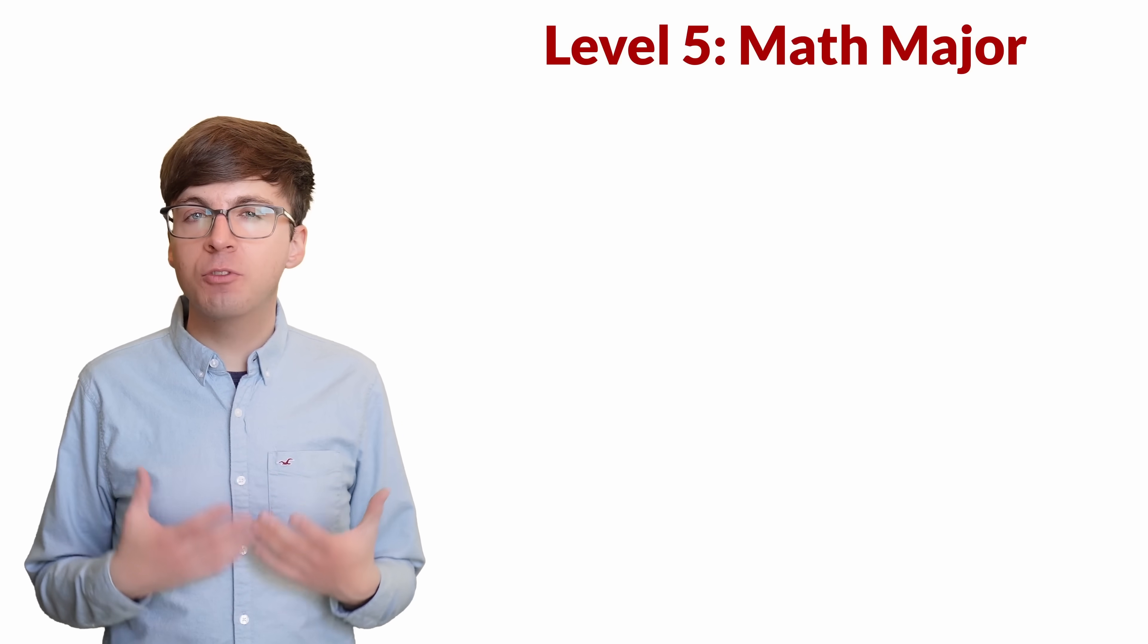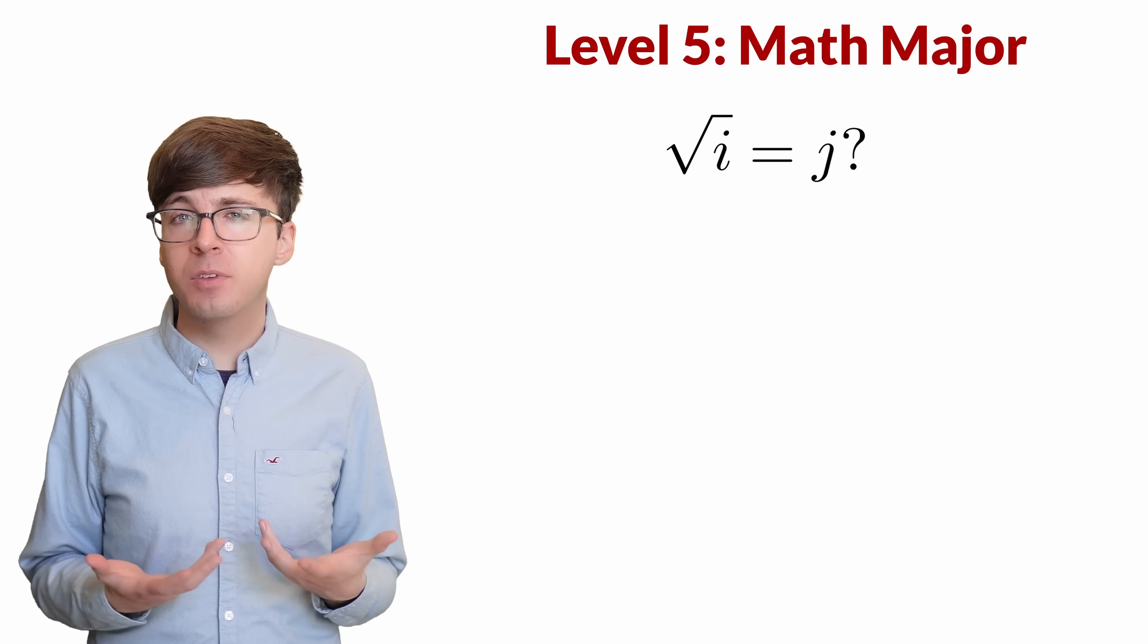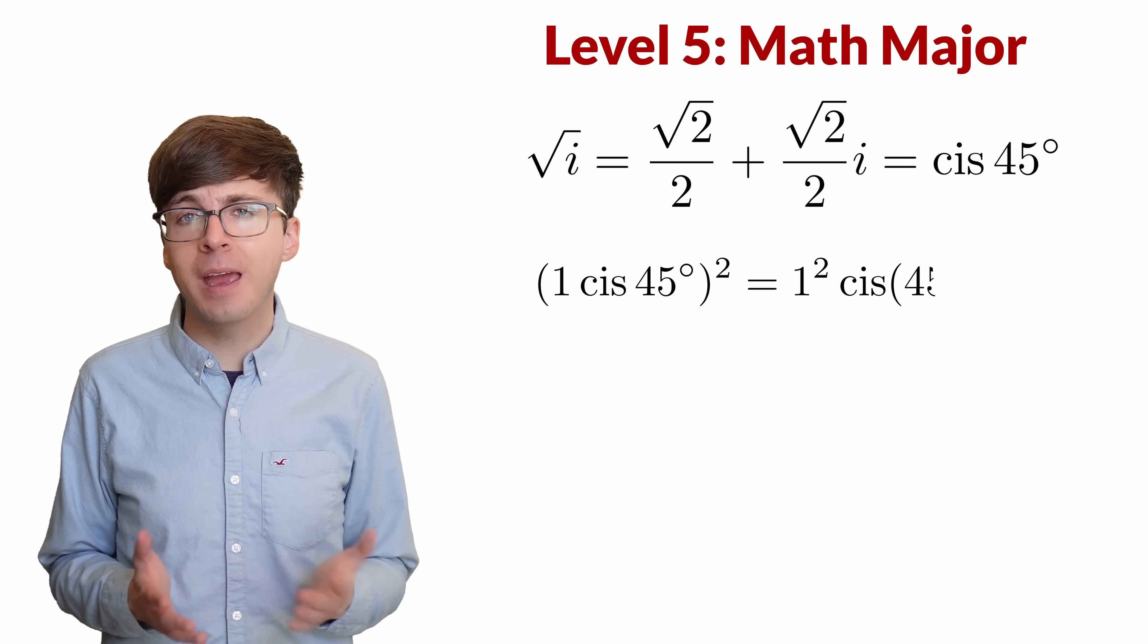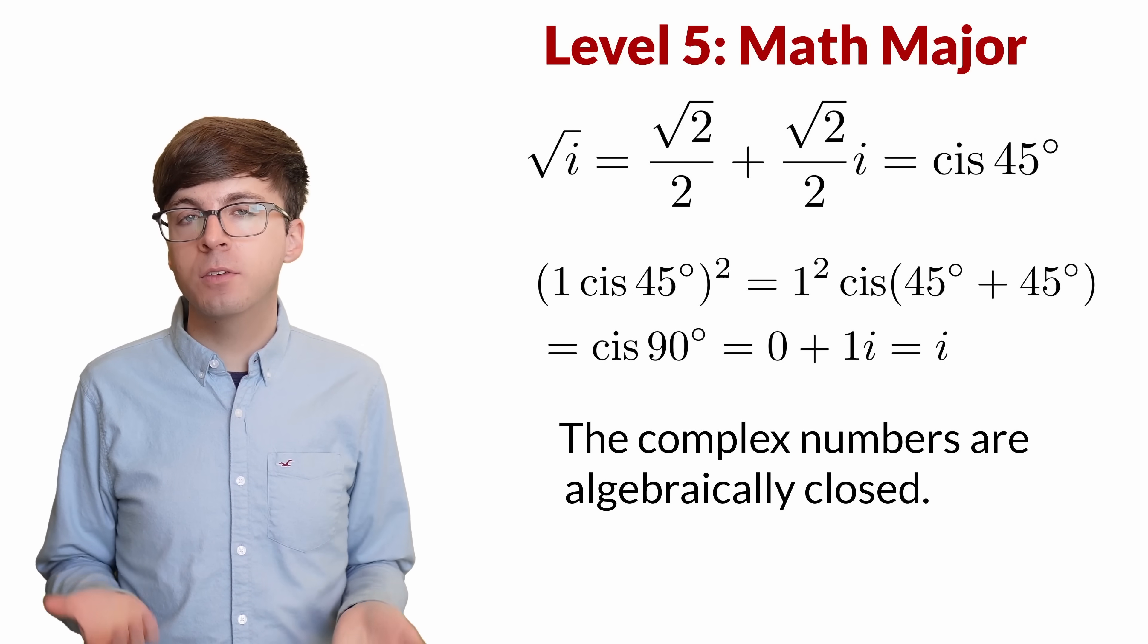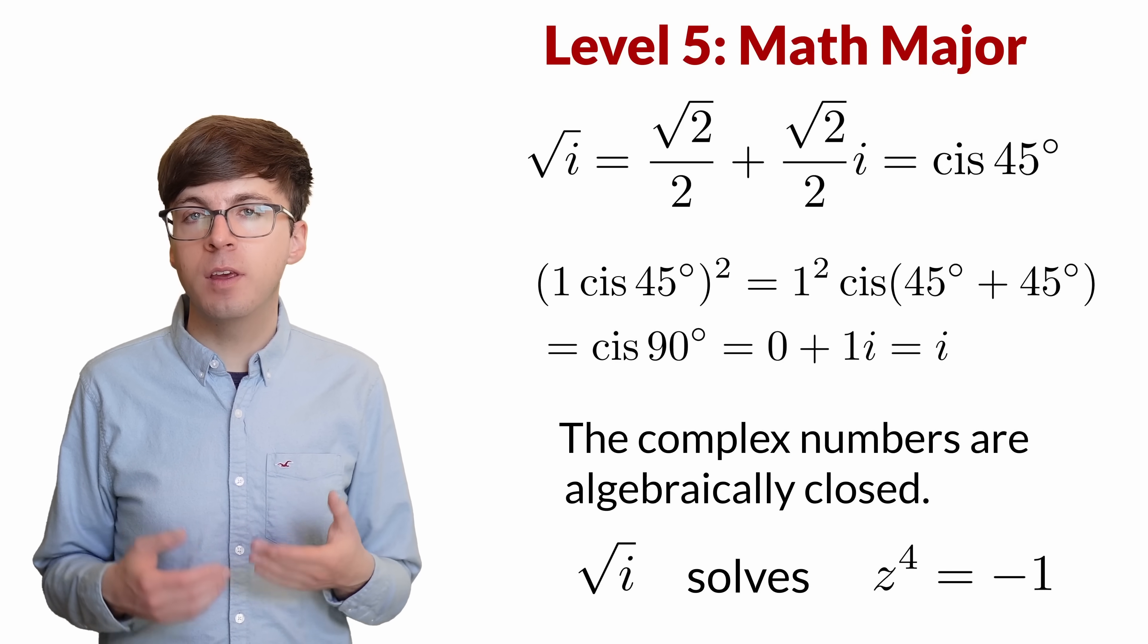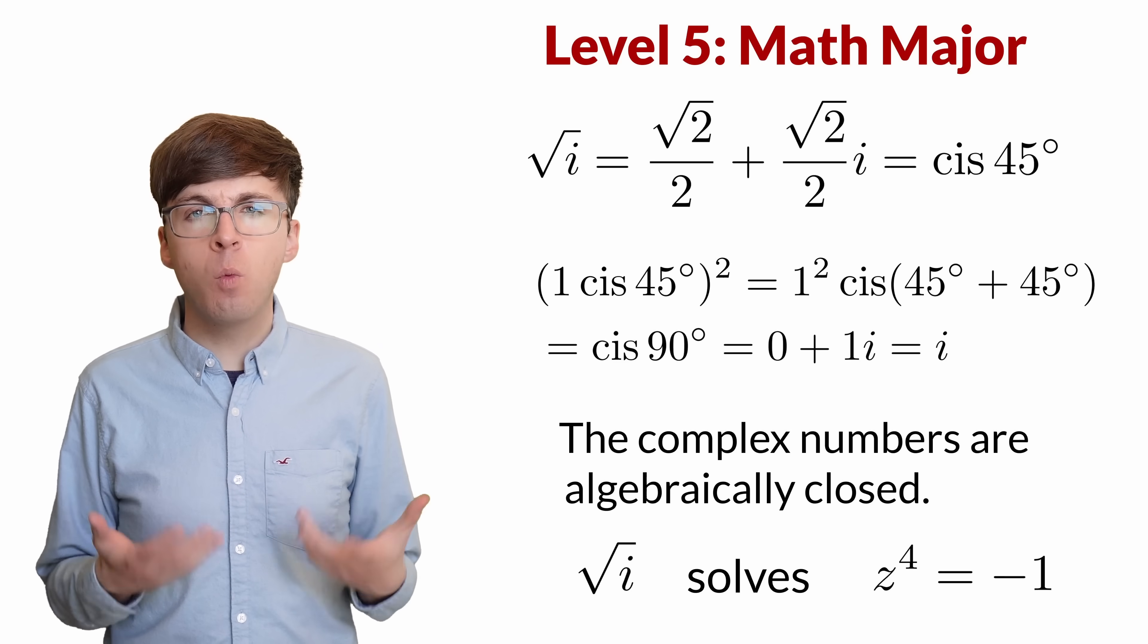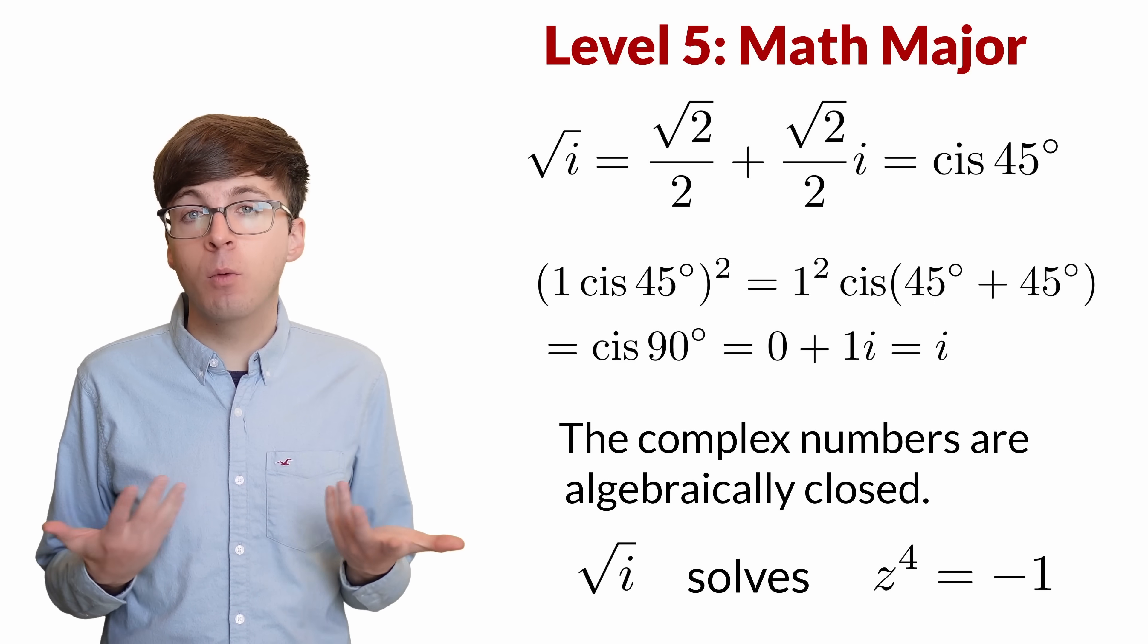For level 5, let's take an abstract algebra perspective. When I first learned about the complex numbers, I wondered about the square root of i. Would we have to make up some other letter for this? And if we do, what algebraic properties would that number system have? But in fact, the square root of i is just another complex number. We don't need to extend the number system any farther to solve this problem, because the complex numbers are algebraically closed. This means that every polynomial with complex coefficients has a complex root. The square root of i is a solution of the polynomial z to the fourth equals negative 1, since when we square it, we get i, and then if you square it again, you get negative 1. Since the complex numbers are algebraically closed, the solution must be a complex number. This helps show why throwing in the imaginary number i helps us solve so many algebraic problems, while also showing us that we don't really need to throw in any more numbers.